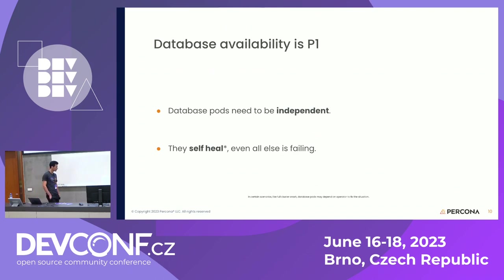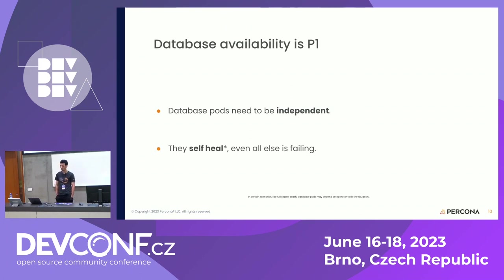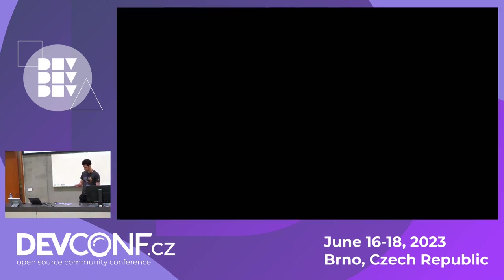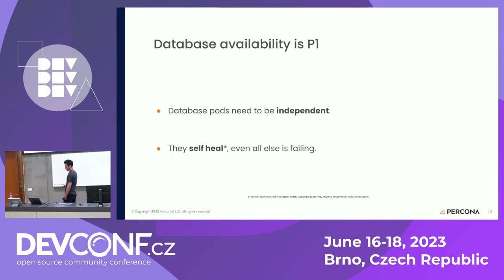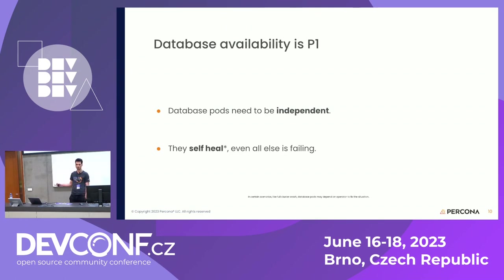The first opinion is about availability. For us, database availability is the number one priority. To have a healthy cluster, you need many components running. We work hard to ensure that database pods are independent — meaning no other component's failure should affect database pods' readiness, liveness, or entry points. They should work even if everything else fails.